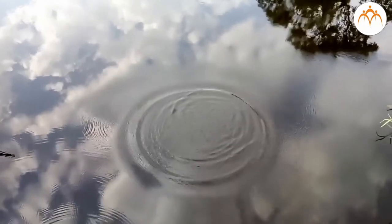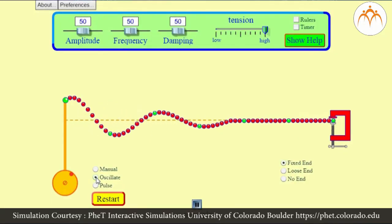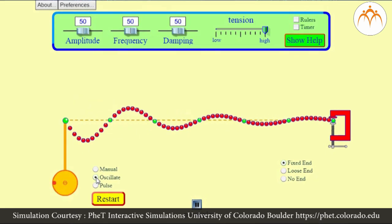A ripple in a pond and a wave on a string are easily visualized as transverse waves. If you anchor one end of a ribbon or string and hold the other end in your hand, you can create transverse waves by moving your hand up and down.